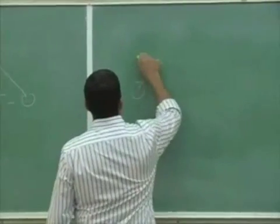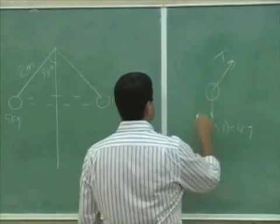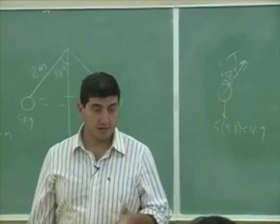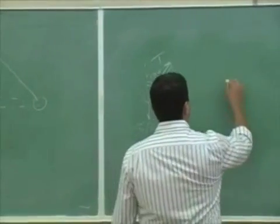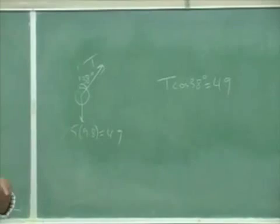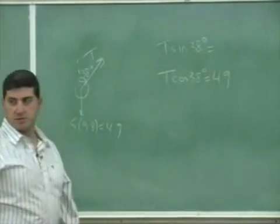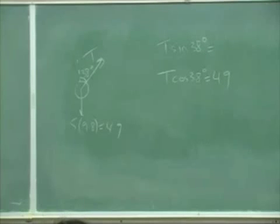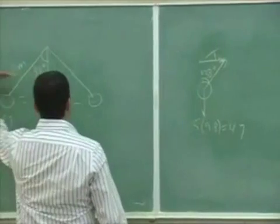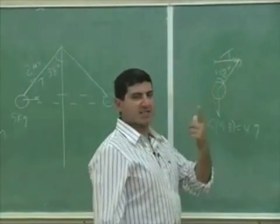We're going to say we have a tension T. The mass is 5 kg, so the weight is 5 times 9.8 equals 49 newtons, and the angle here is 38°. So we have T cosine of 38° must be equal to 49. And then T sine of 38° must be equal to the centripetal force — that's the inward push of the string. T sine of 38° is what is making this thing go round in a circle.